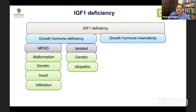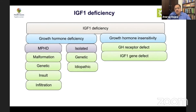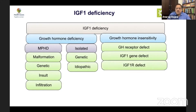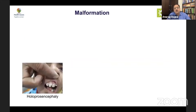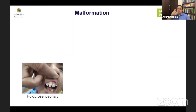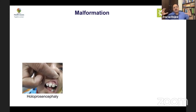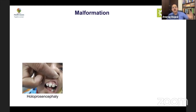Malformations are particularly important to consider in early-onset growth hormone deficiency. These include holoprosencephaly, which is a severe defect in forebrain fusion presenting with cyclopia, a single central incisor, and microcephaly. These features will pick up very early-onset multiple growth hormone deficiency.